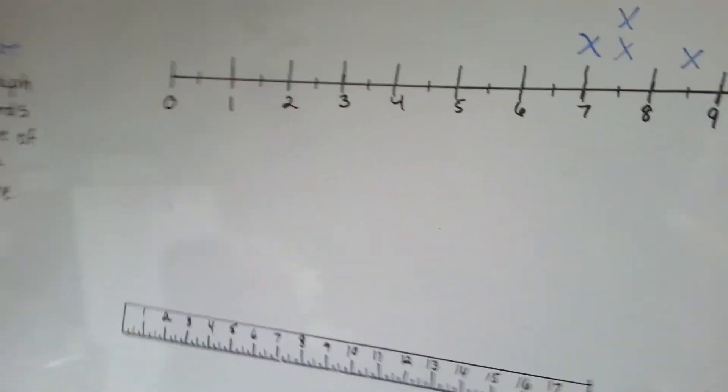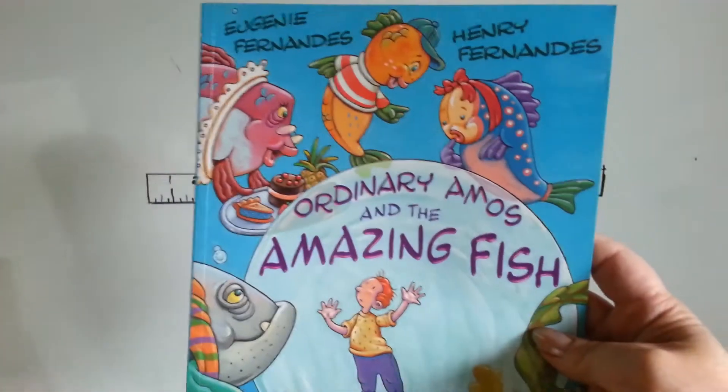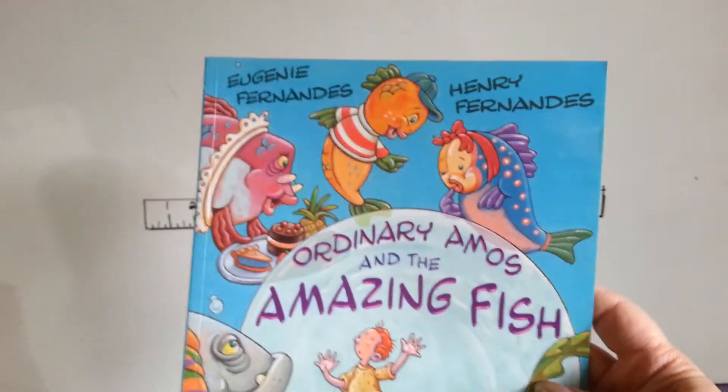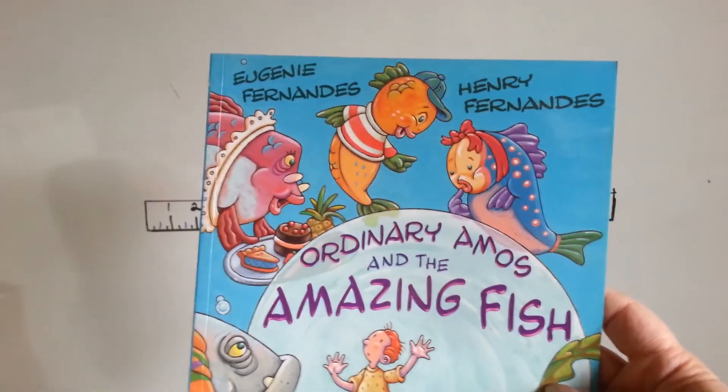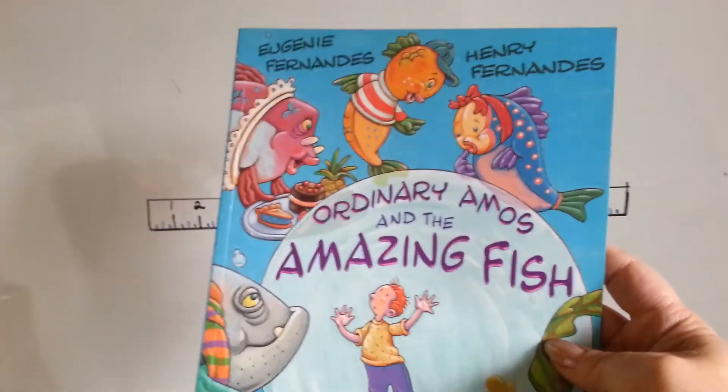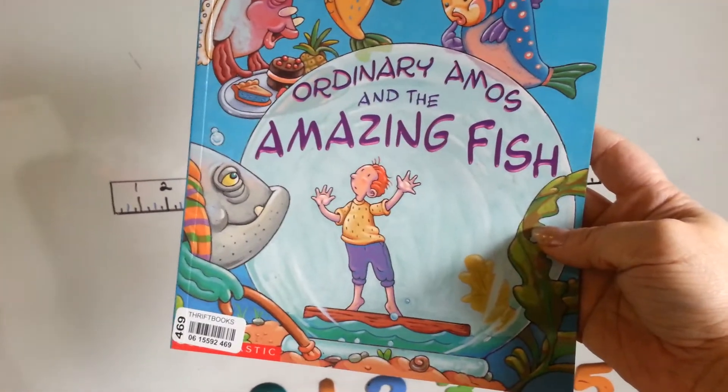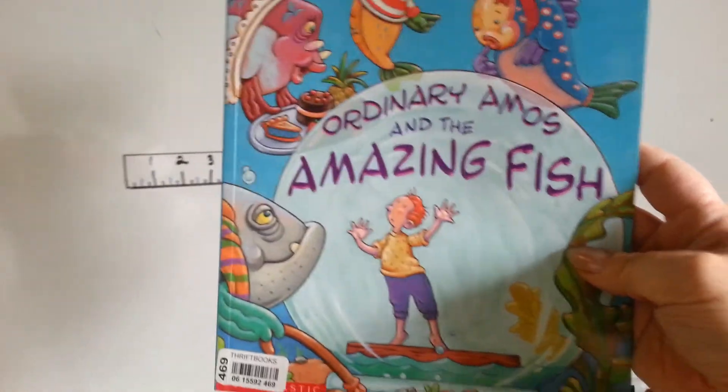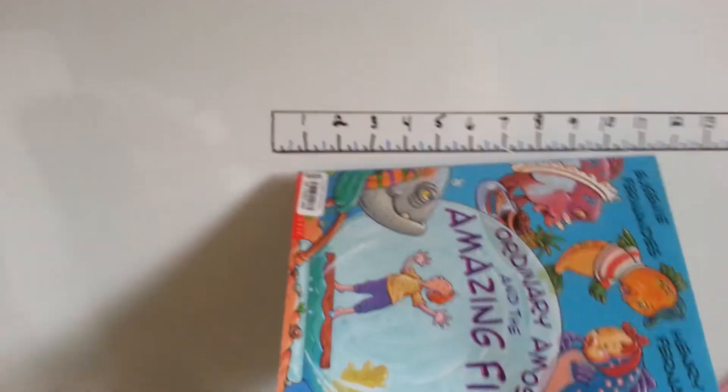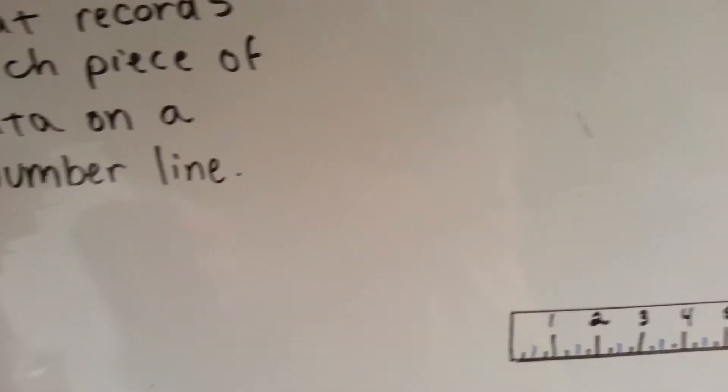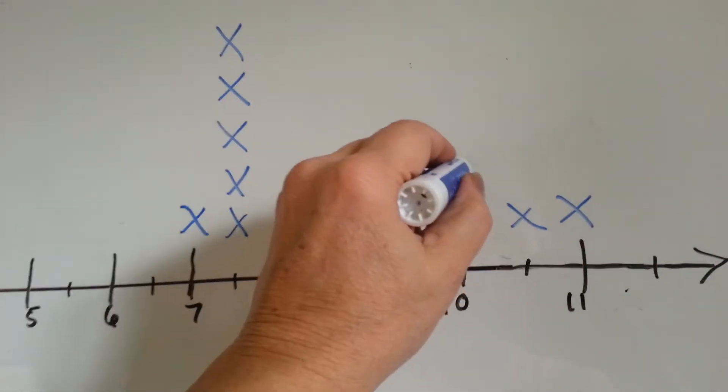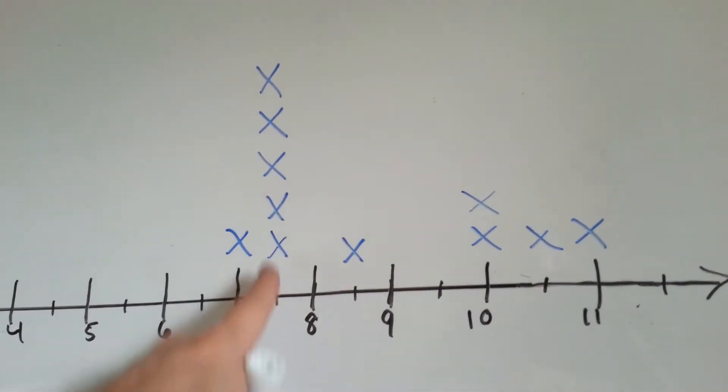The next book we've got is Ordinary Amos and the Amazing Fish. This is a very cute book also by Eugenie Fernandez and Henry Fernandez. It's about a fish who catches a boy and he doesn't really take good care of him. So, it's flipping the story around on not taking care of the pet. Very cute story. Let's measure the spine. And it looks like it is 10 inches for Ordinary Amos and the Amazing Fish. So, we're going to put another x by the 10. So, 10 has two of them, but 7 and a half is still winning.